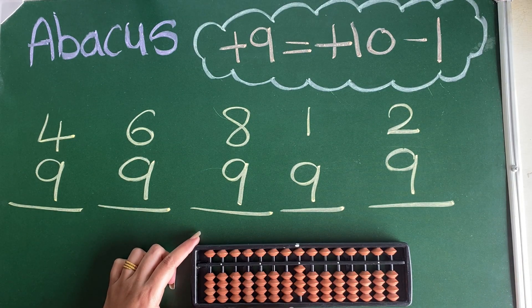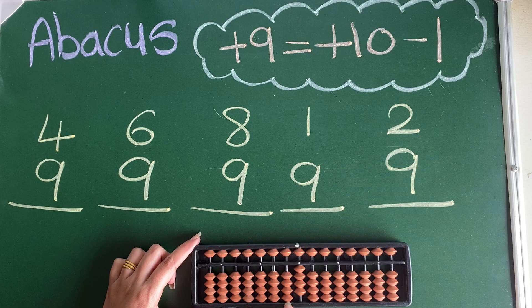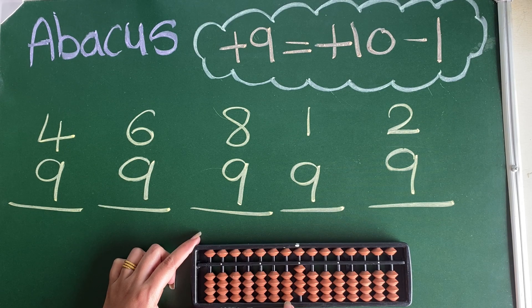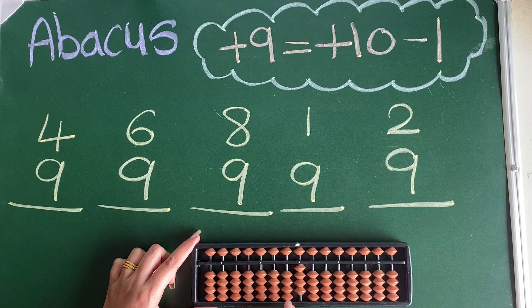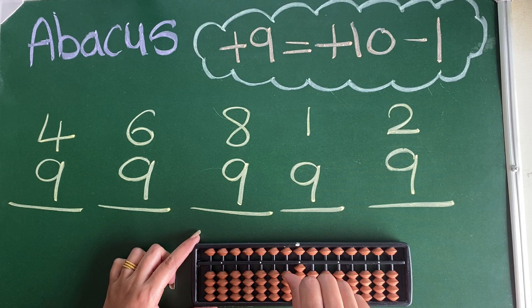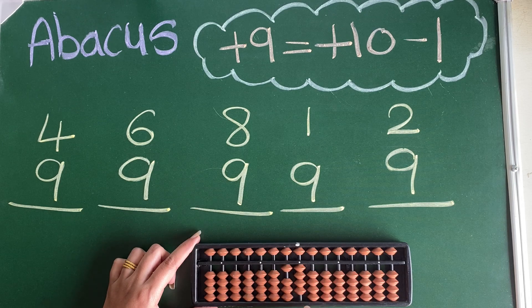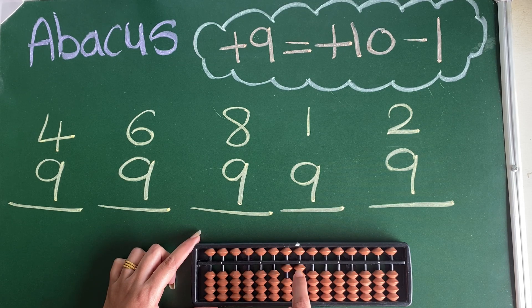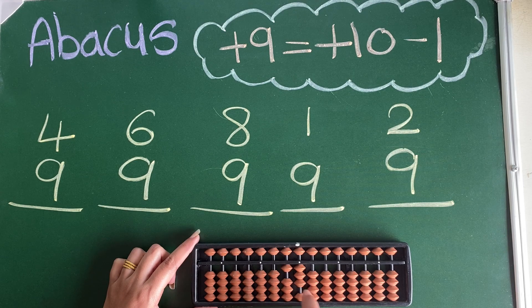For plus 9, we have to take it from tens place. So what we will do? We will do plus 10 minus 1. Answer is 10, 11, 12, 13.